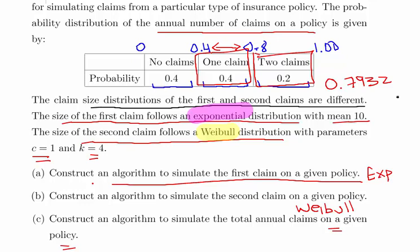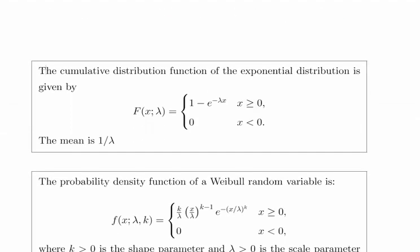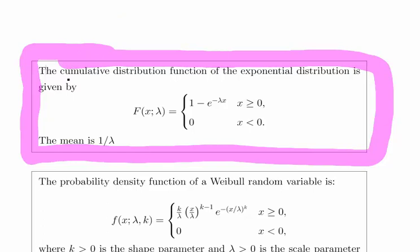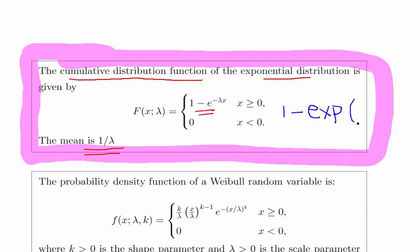To simulate exponential random variables using the uniform distribution, what we need is a cumulative distribution function. For the exponential, the CDF is 1 minus the exponential of minus lambda x, for x greater than or equal to 0. The mean is 1 over lambda.